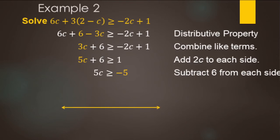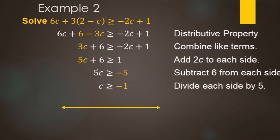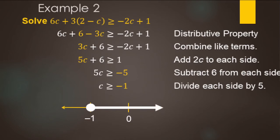Now it's a two-step: subtract six, giving negative five, then divide by positive five. So c is greater than or equal to negative one. On the graph we include zero and negative one. It's 'or equal to,' so negative one gets a closed circle because it is a solution. Since c is greater than, we shade to the right for numbers bigger than negative one.